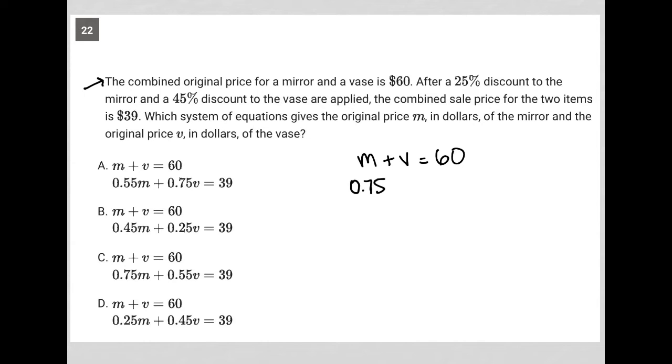So 0.75 times M, and 45% discount for the vase. Again, starting at 100% of our cost, we're reducing that by 45% of the cost, which should leave us with 55% of the cost. So 0.55 for the vase.